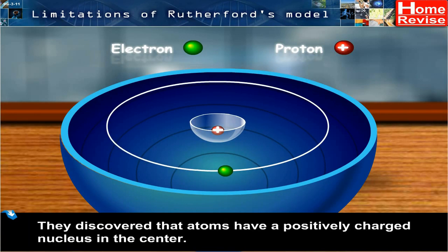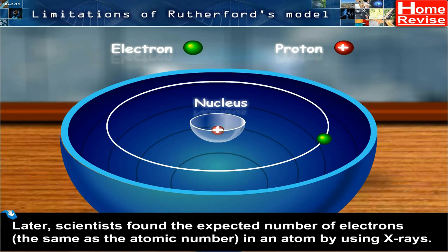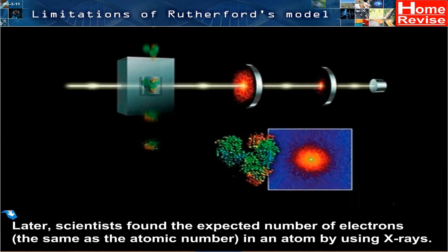They discovered that atoms have a positively charged nucleus in the center. Later, scientists found the expected number of electrons, that is, the same as the atomic number, in an atom by using x-rays.